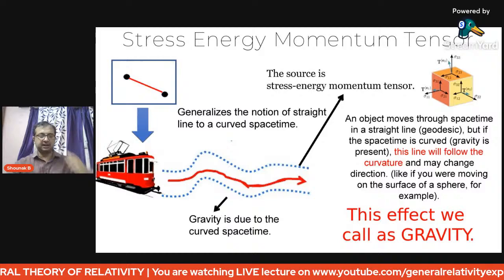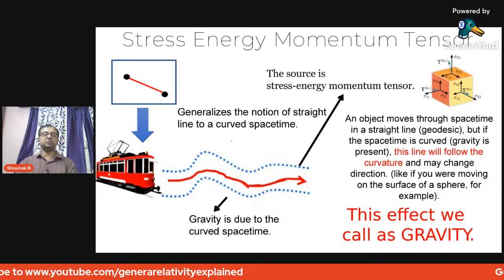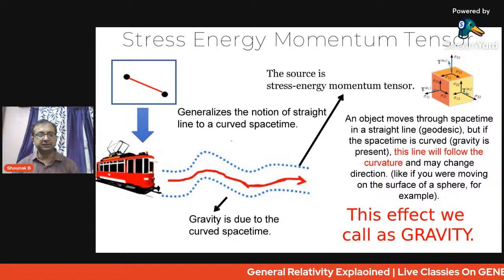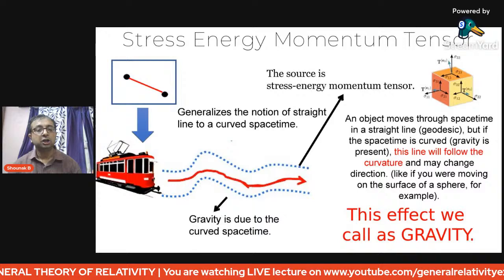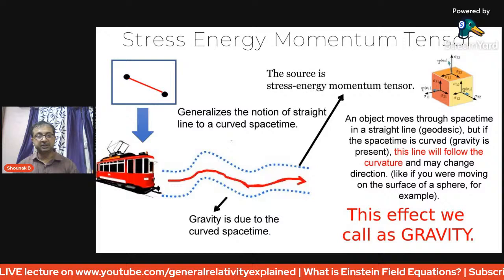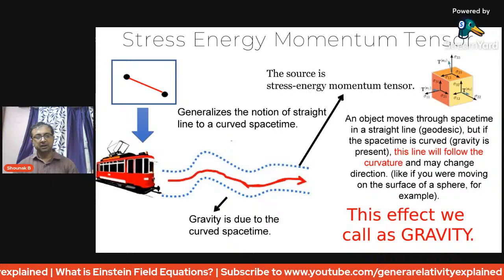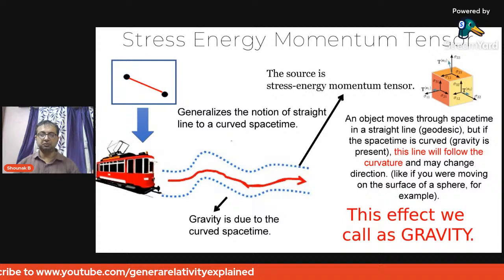If we take a geodesic — a generalization of a straight line into a curve — matter moving through spacetime follows these geodesics. This is what is responsible for causing gravity. An object moves through spacetime in a straight line, which is a geodesic, but if spacetime is curved due to gravity, the line will follow the curvature and may change direction, like moving through a sphere. This effect is what is known as gravity.